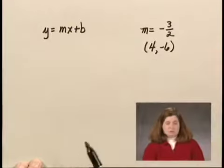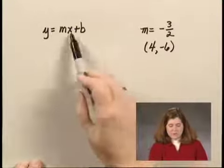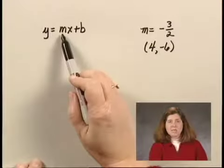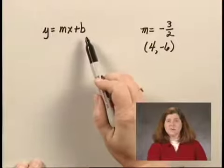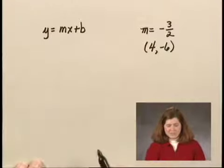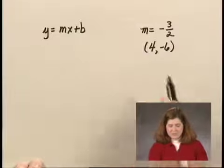We can substitute 4 for x, -6 for y, -3/2 for m, and solve for b. And then we can write the slope-intercept form of the equation. So let's do that.